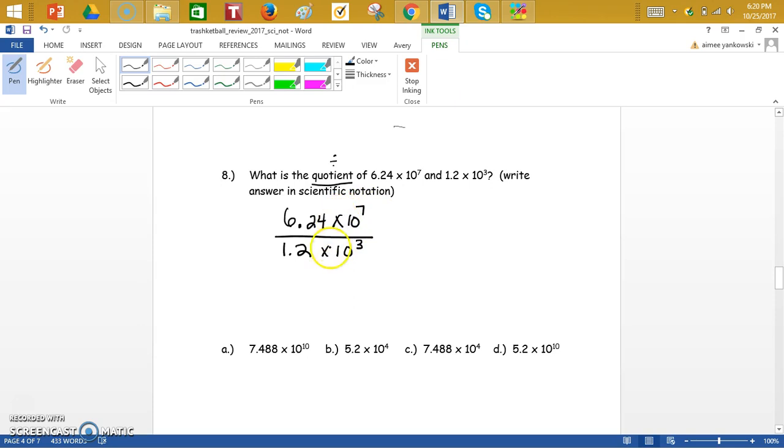So we have 6.24 times 10 to the 7th divided by 1.2 times 10 to the 3rd. I'm going to do my base of 10 first because that's easier. So when we're dividing and we have the same base, we keep the base and we subtract those exponents. Now my other part, I actually have to divide out. So we're going to take 6.24 and divide that by 1.2. If I'm going to divide by 1.2, I actually have to move that decimal one to the right.